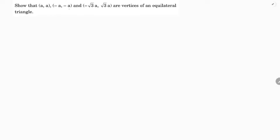Show that (a, a), (-a, -a), and (-√3a, √3a) are the vertices of an equilateral triangle. If we consider these as points A, B, and C, to prove it is an equilateral triangle, we need to prove that all the sides are of equal length.